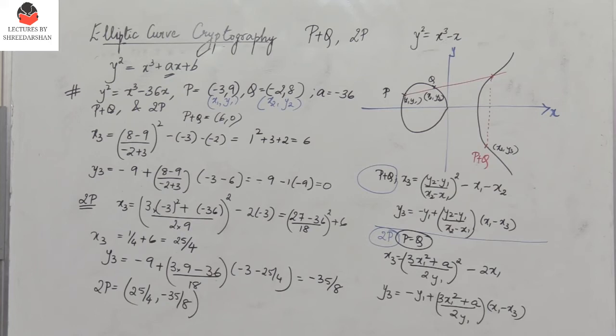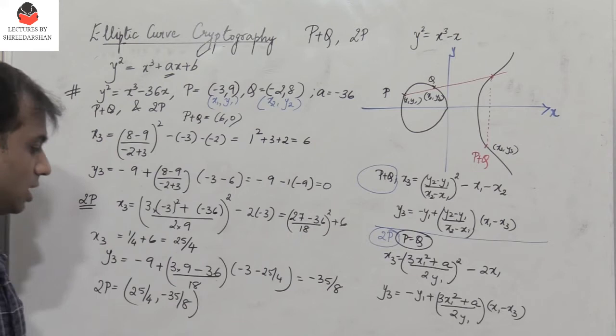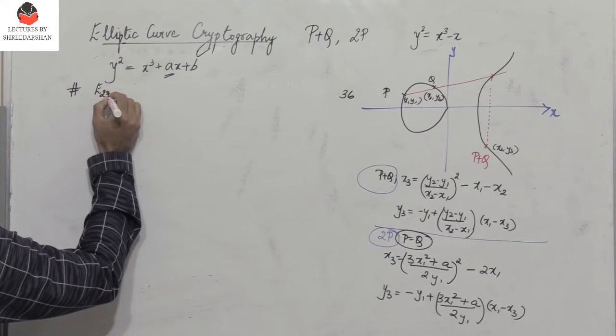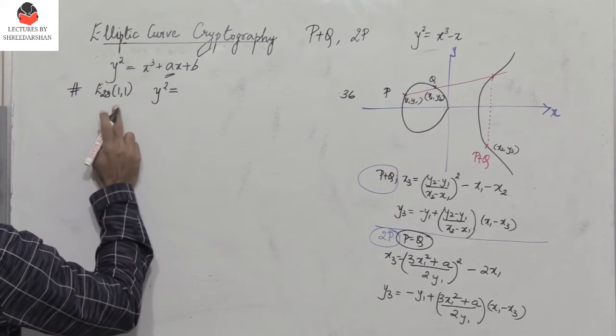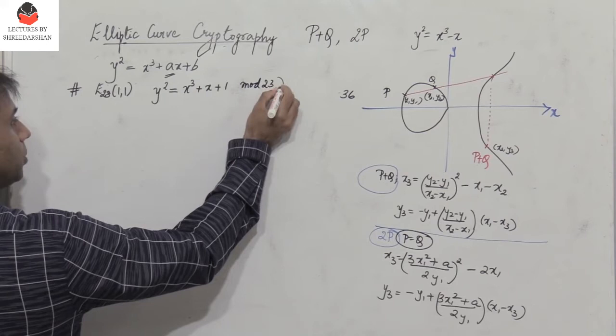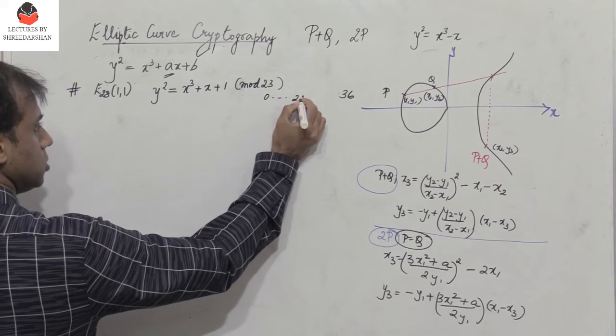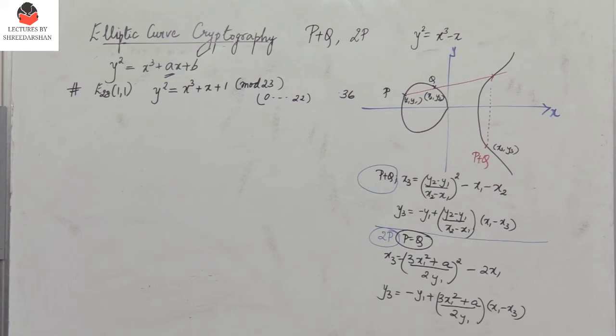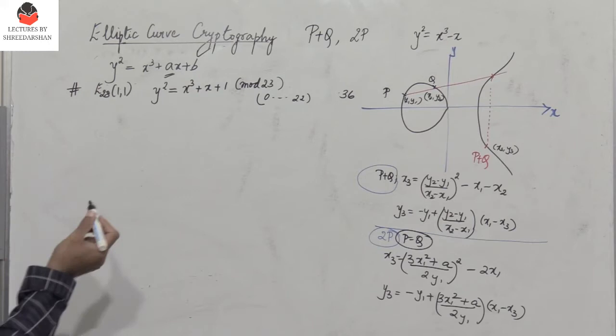Now let us consider an elliptic curve in a given modulus. Consider the elliptic curve E23(1, 1), meaning y squared equals x cubed plus x plus 1 where a equals 1 and b equals 1, operating in mod 23. When operating in mod 23, you only get values from 0 to 22, so all coordinates of P plus Q or 2P will be integers in that range — you will not get fractions.